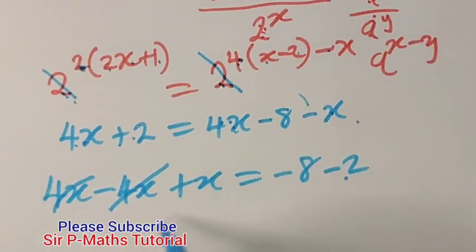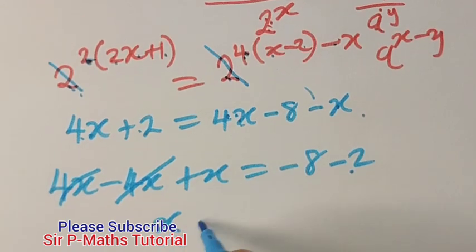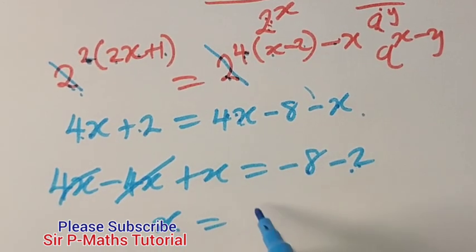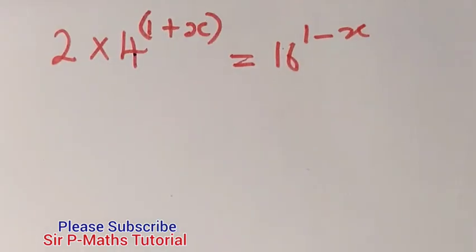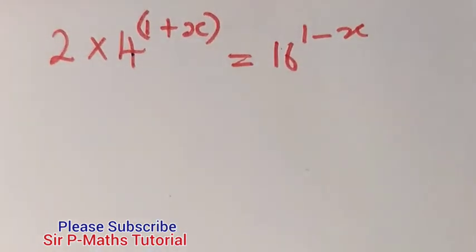Now 4 minus 4 has gone and now have x to be equal to minus 8 minus 2 will give me minus 10. So let's continue the solutions with this number 2 equation.